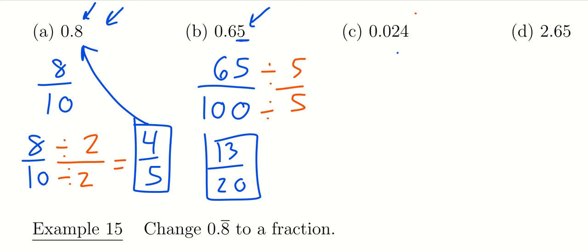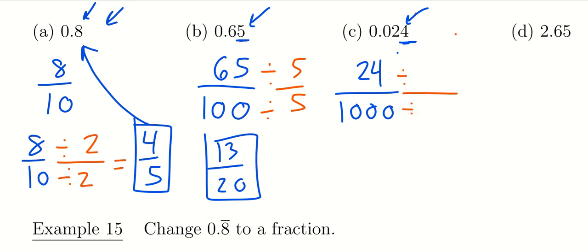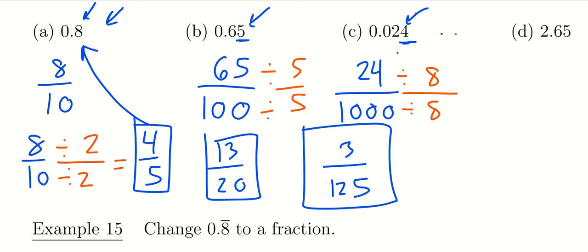For the next one, step one: throw away the decimal point to get 24. The last digit, 4, is in the thousandths position, so 24 goes over 1,000. We want to reduce this. The GCF of 24 and 1,000 is 8. Twenty-four divided by 8 is 3, and 1,000 divided by 8 is 125. So 0.024 is equivalent to 3/125.